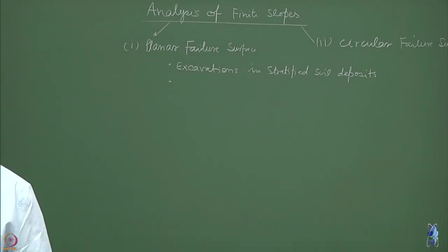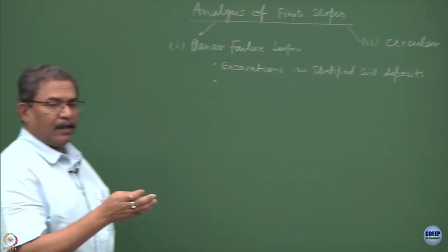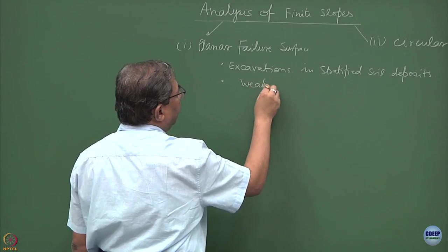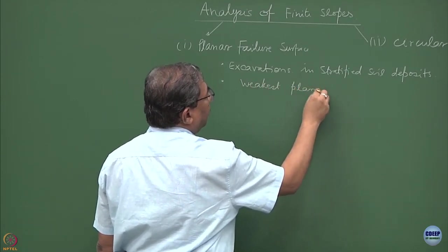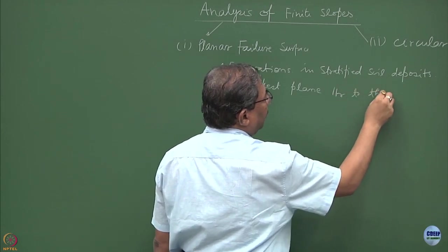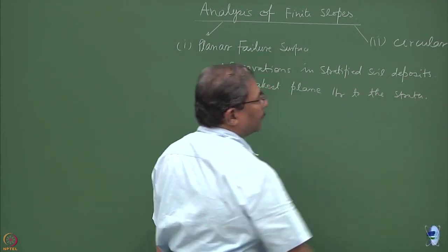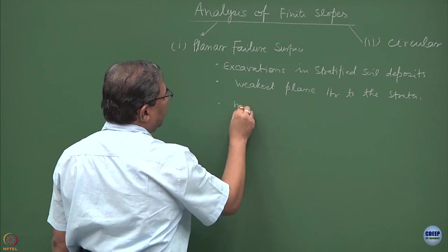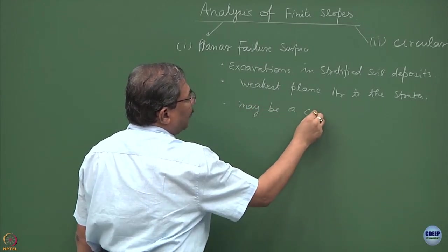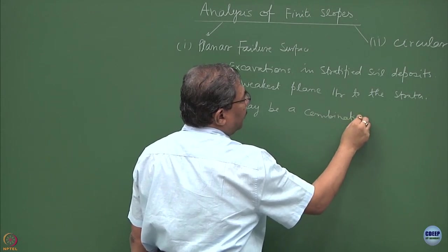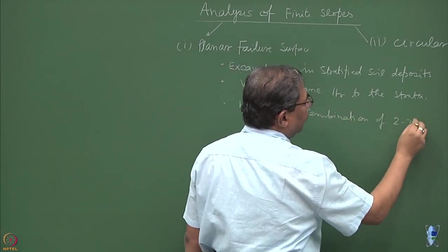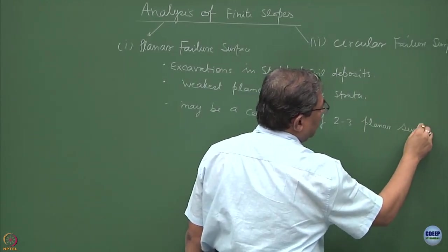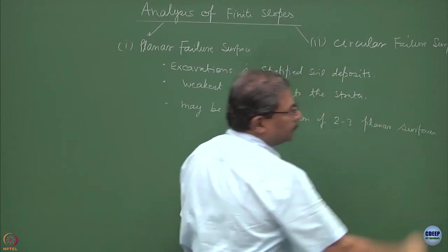What is the second characteristic? This is going to be the weakest plane parallel to the strata. And this could be a combination of two to three planar surfaces also, may be a combination of two to three planar surfaces.